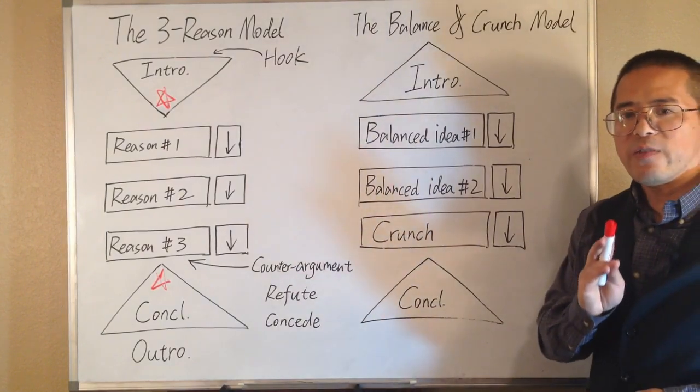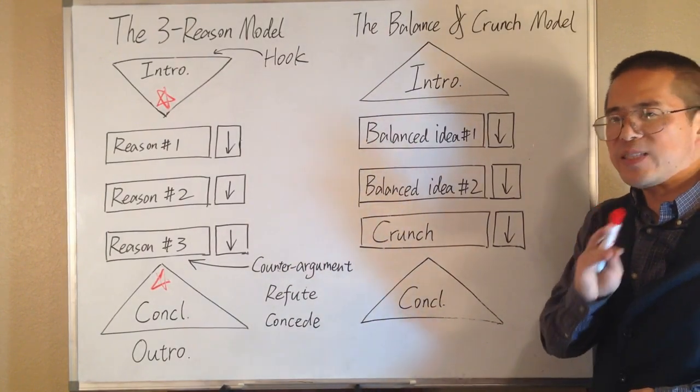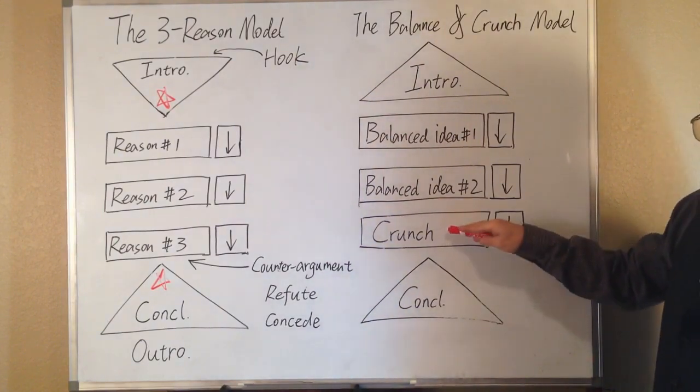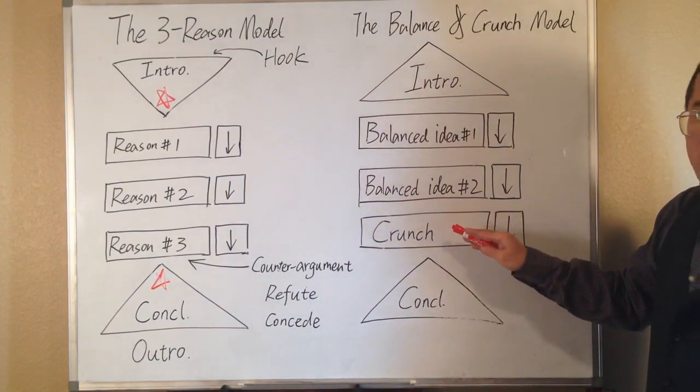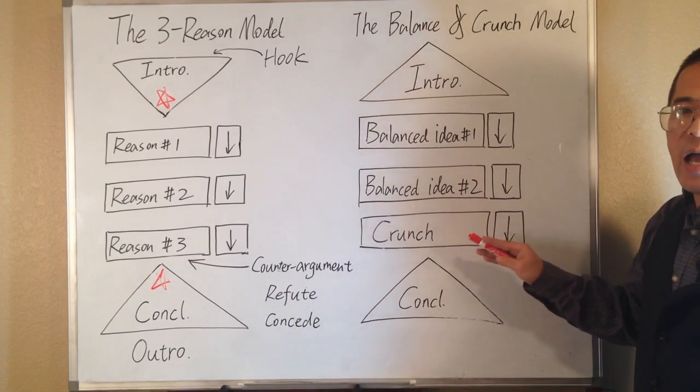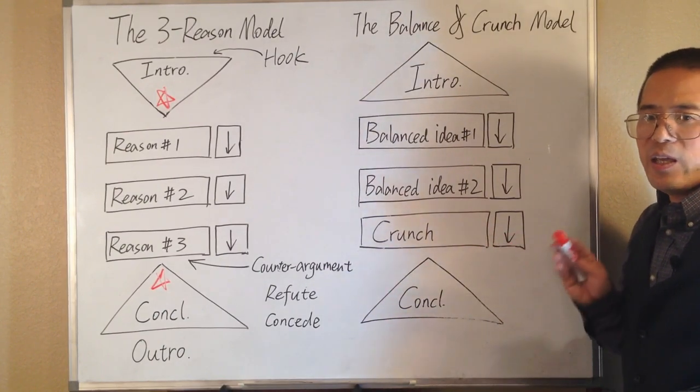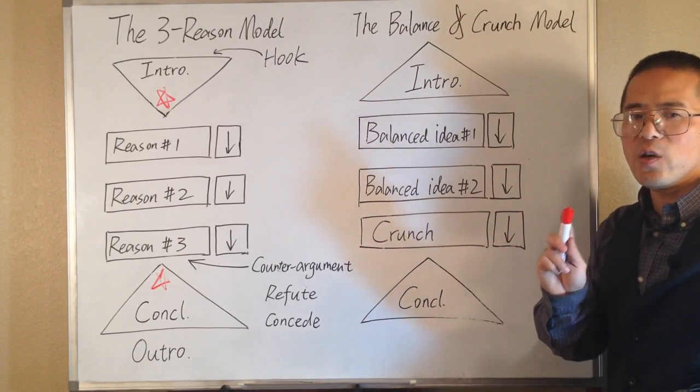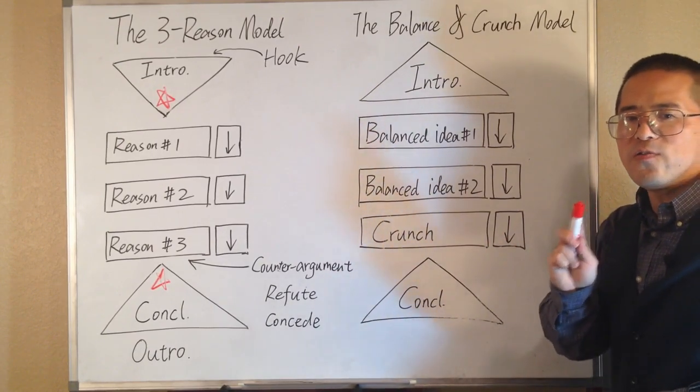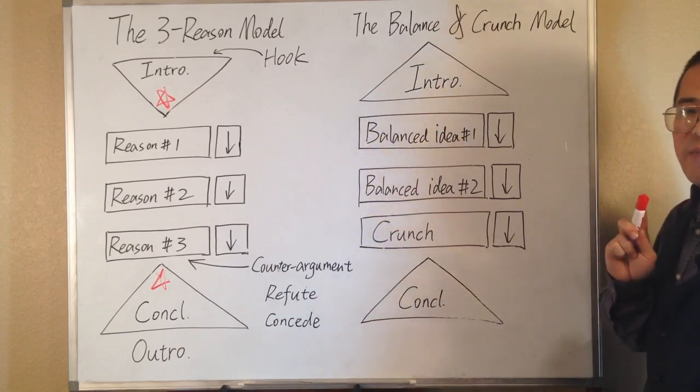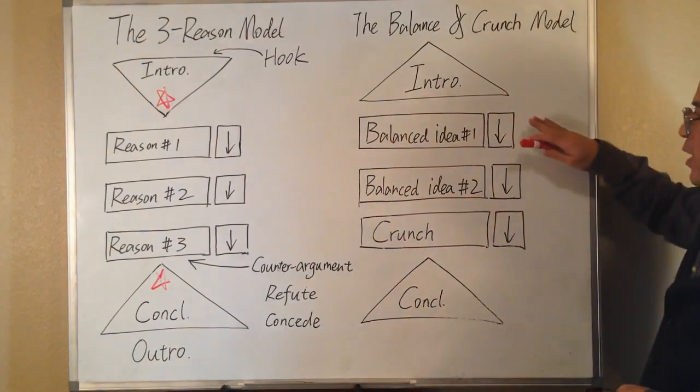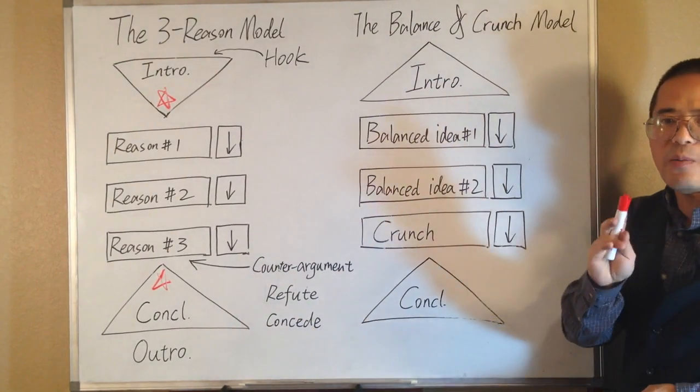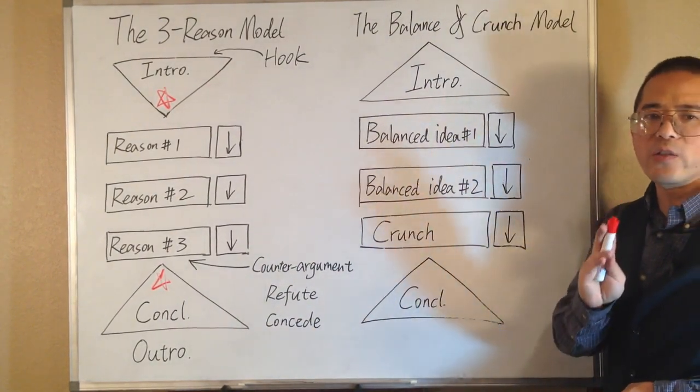And we save our best idea for paragraph 4, the crunch. Paragraph 4 is where we add our own private opinion. It may be just a small bit of information, but it is so important, so vital, that it can break the balance established in paragraph 2 and 3. And it can help our reader to make the final decision.